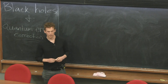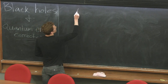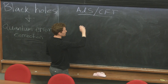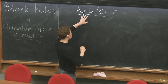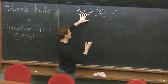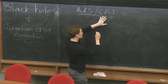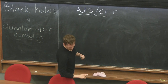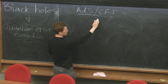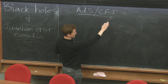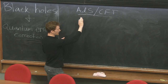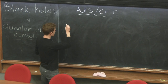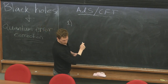One route to getting answers to these questions seems to be ADS-CFT — this famous duality. The idea is that you have some quantum gravity theory in some d+1-dimensional space-time, and it's dual to some quantum mechanical theory in one fewer dimensions. In principle we understand the CFT, and there's a relationship between them, so we have a route to getting answers.